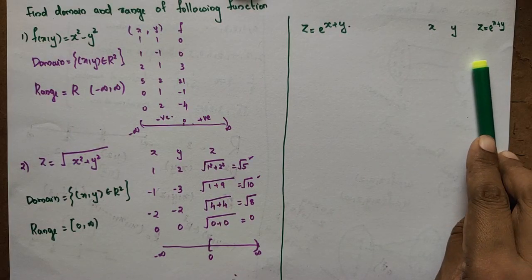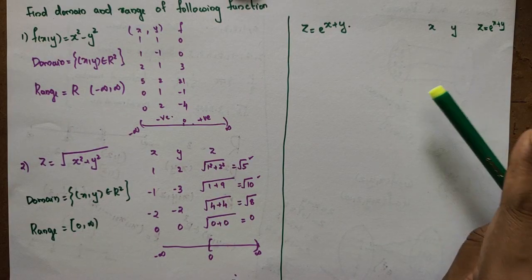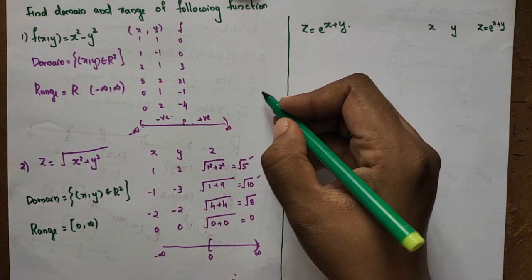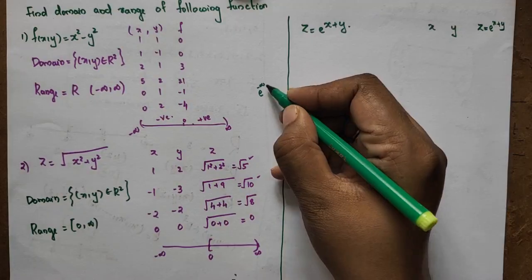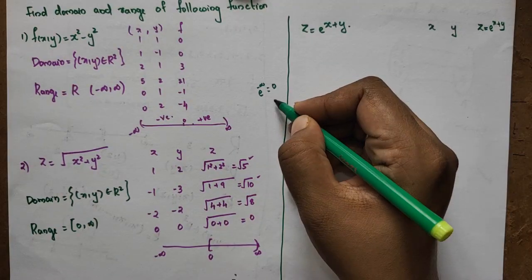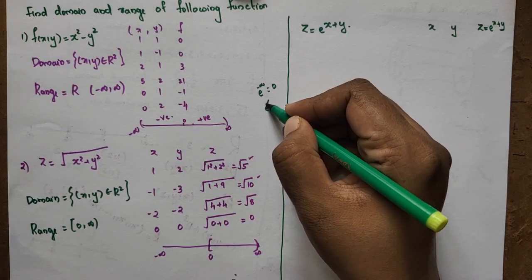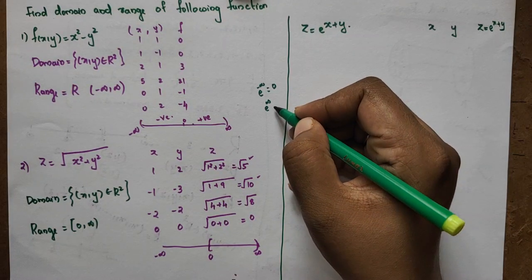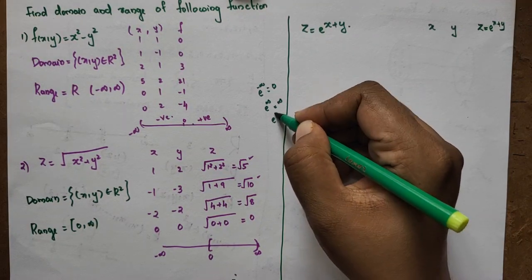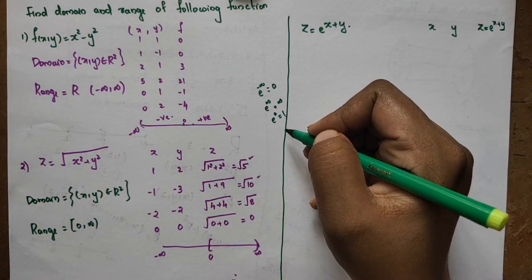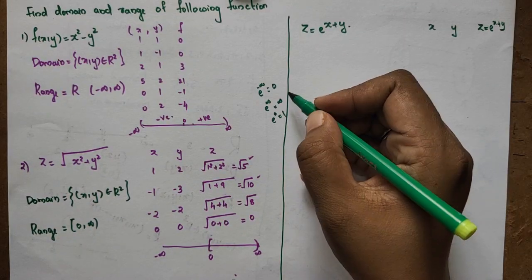If we think about this function: e raised to minus infinity is zero, and e raised to infinity is infinity. So the exponential function takes all real values for x plus y.